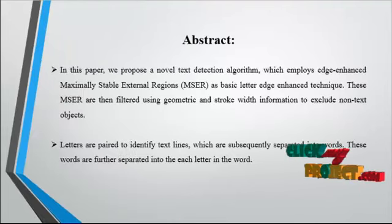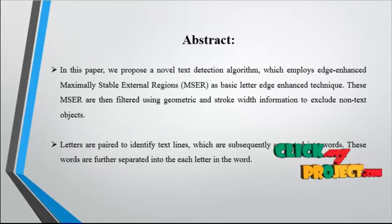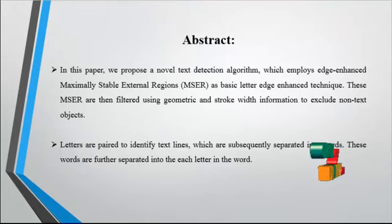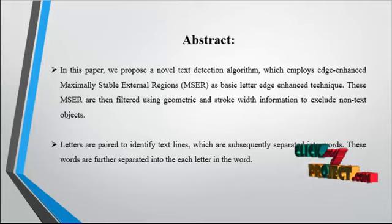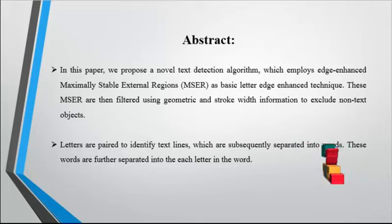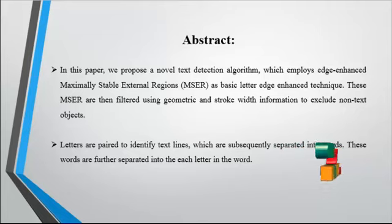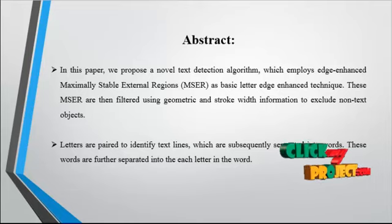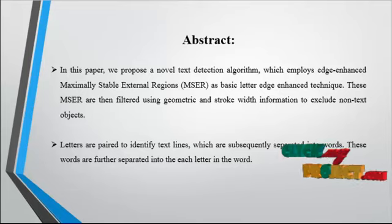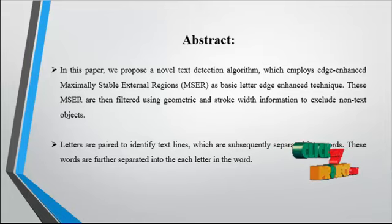Now we discuss about the abstract. Detecting natural image is an important role in text detection and removal. In this paper, we propose a novel text detection algorithm which employs edge-enhanced maximally stable extremal regions (MSER) as basic letter candidates. These candidates are then filtered using geometric and stroke width information to exclude non-text objects.